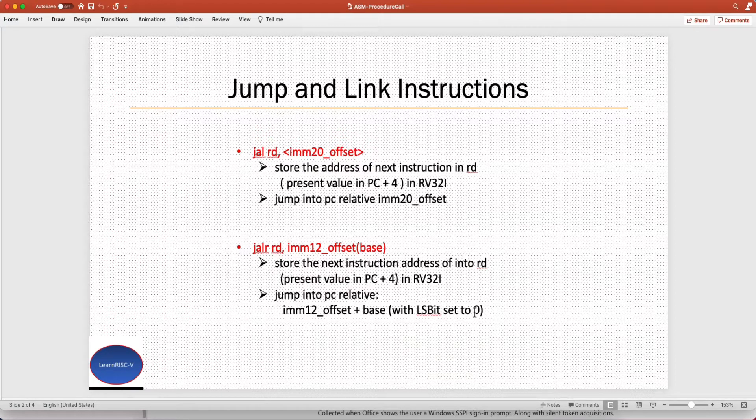The least significant bit is always set to zero here. If you want to discard the return address, sometimes you don't need to store the address of the next instruction. In that case, you can just specify x0 or zero here. Zero means the register x0, because it's always tied with zero and it wouldn't be overwritten. So that's about the jump and link instructions.